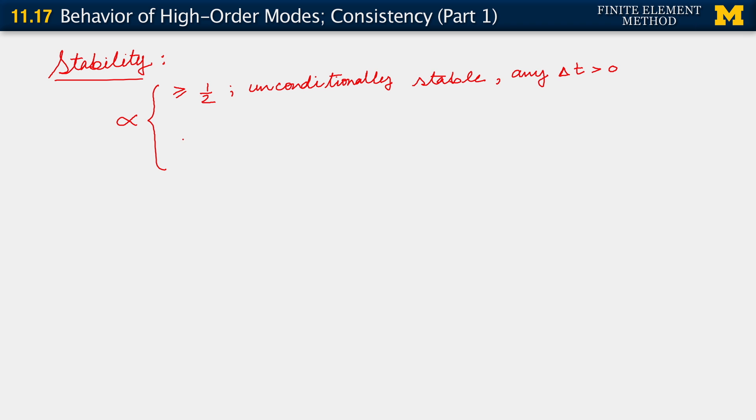For the other cases, when we have alpha less than 1 half, and remember, alpha has to lie between 0 and 1, so it can't get smaller than 0. So if alpha is less than 1 half, what we have are methods that are conditionally stable.